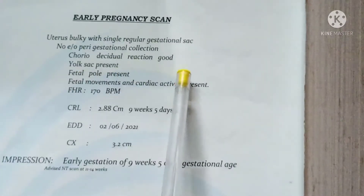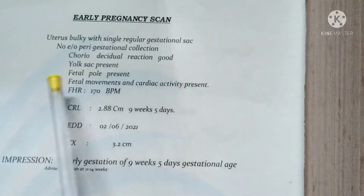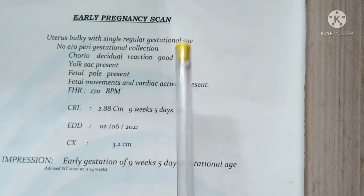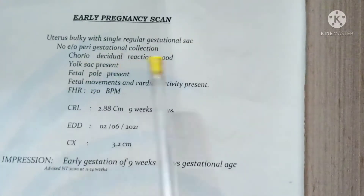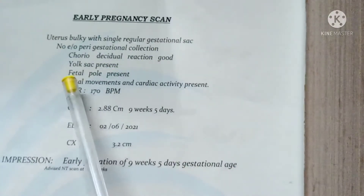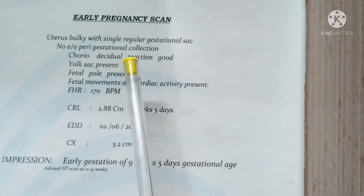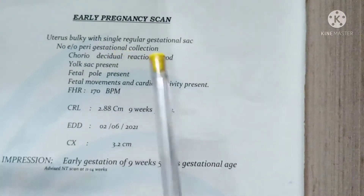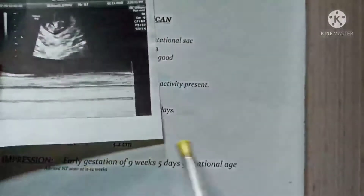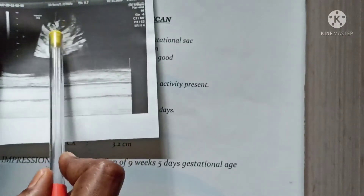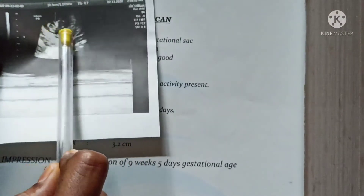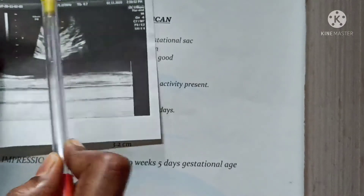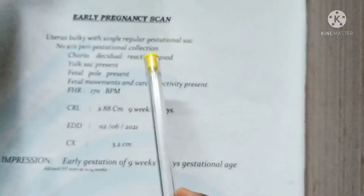Cardiac reaction is good. When the uterus has a reaction, you can see that they are very strong. A gestational sac is present — we can see a sac, a baby, a gestational sac, or a yolk sac.